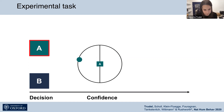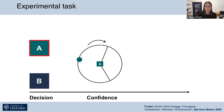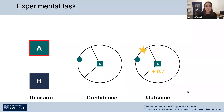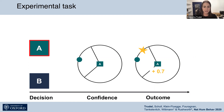If it's the first time you choose a predictor and you're rather uncertain about its accuracy, it would be better to open up the interval. On the other side, if you've chosen multiple times from the same predictor and observed it is quite good, you should narrow down the interval. You then get into the outcome phase, where you see the true target location as a yellow star and the possible points gained on that trial. Whether you gain points depends on whether the target falls inside or outside the interval; the bigger the interval size, the fewer points you receive, and if the target falls outside, you receive zero payoff.